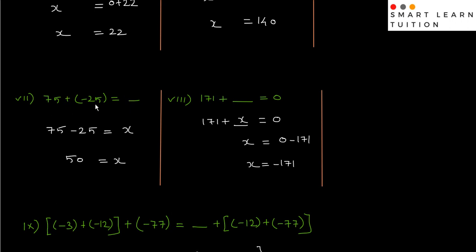First step: open the brackets. Plus into minus is minus. So 75 minus 25 equals to dash. So 75 minus 25 is 50. So 50 equals to x. This is the answer — answer is 50.